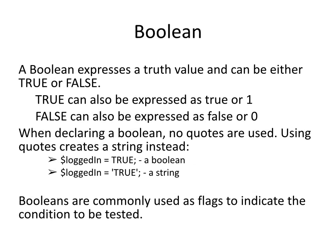Booleans are expressions of truth values and can either be true or false. Please note that true or false are usually expressed as all-capital constants. True can also be expressed as lowercase true or the value of 1. False can be expressed as lowercase false or the value of 0. When declaring a boolean, no quotes are used — using quotes creates a string instead. Notice the examples: the variable logged_in given the value of TRUE without quotes is a boolean, while logged_in given the value of 'true' in quotes is a string. Booleans are commonly used as flags to test whether or not a condition is true or false.